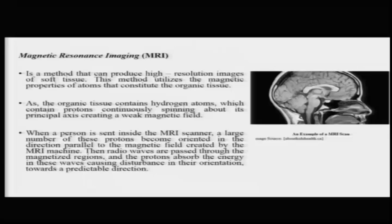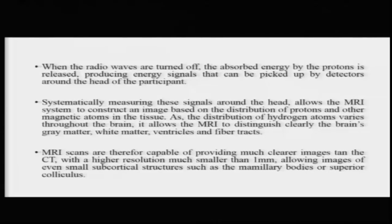This magnetic field is instrumental in getting the images out. When a person is inside the MRI machine, protons in the organic tissue become oriented parallel to the magnetic field. Radio waves are then passed through the magnetized regions and the protons absorb the energy, causing a disturbance in their orientation in a predictable direction. When the radio waves are turned off, the absorbed energy is released, producing energy signals that are picked up by detectors in the MRI scanner. Systematically measuring these signals around the head allows the MRI scanner to construct an image based on the distribution of protons and magnetic atoms in the tissue.